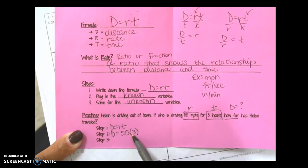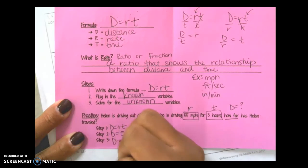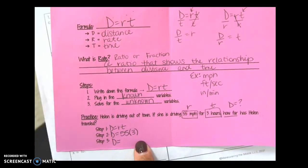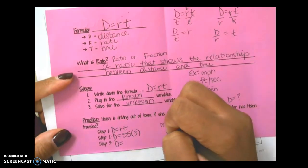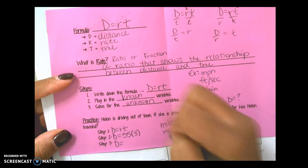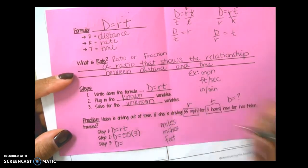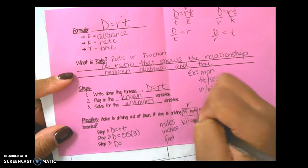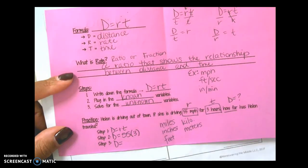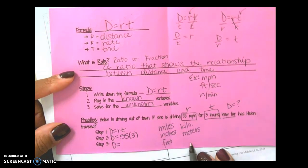This means 55 times 3. D equals, you need your answer here, and you need to have it in the proper units. So distance is measured in miles, inches, feet, kilometers, meters. You need to choose the appropriate one that goes with this question.